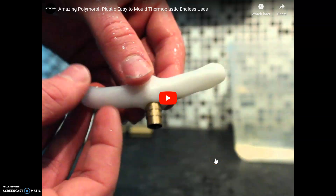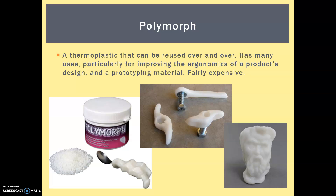Our last smart material is polymorph. We have some of this at school and I will give you a little demonstration. In summary, polymorph is a thermoplastic that can specifically be reused over and over again. It has a lot of uses, particularly for improving the ergonomics of a product's design, and as a prototyping material for use in school. It is quite expensive though.